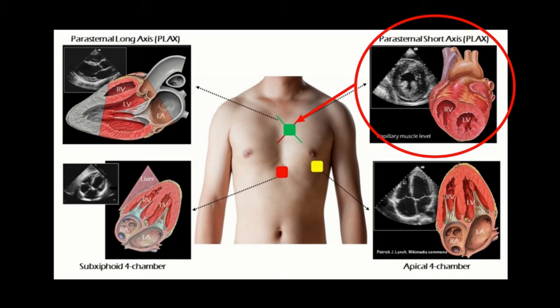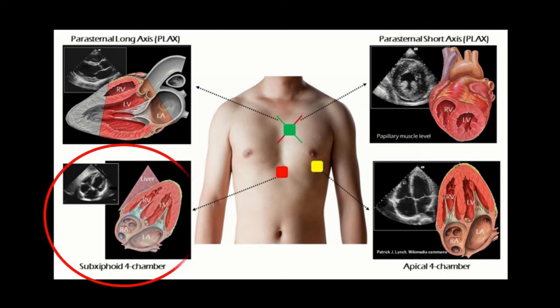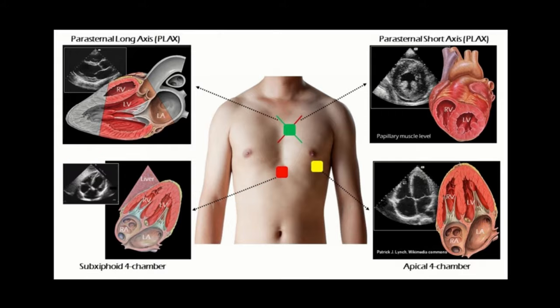The short axis view is taken at three different levels by tilting the probe towards the cardiac apex gradually. The subcostal view is obtained when we place the echo probe in the subxiphoid region in the midline. For a 4-chamber view from the subcostal position, the direction of the orientation marker should be towards the left side of the patient.